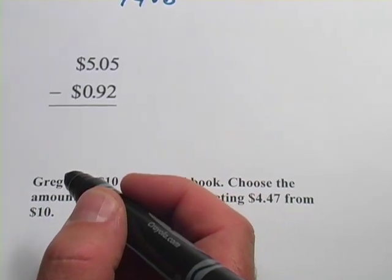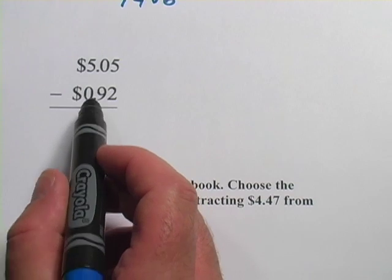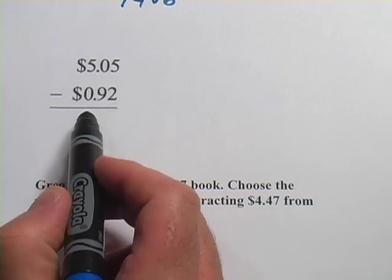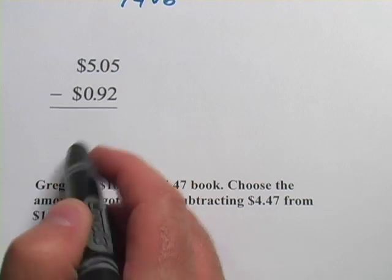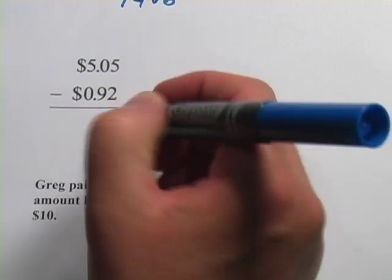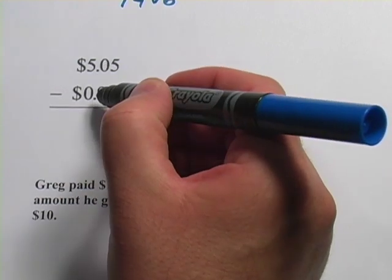It's pretty much the same way with money. The only thing you have to pay attention to is that when you set up the problem, you line it up so that the decimal points are in the same spot. They've already done that for us, so we're just going to go ahead and subtract. 5 minus 2 is 3. And here we have 0 minus 9, well, we're going to definitely need to borrow for that.